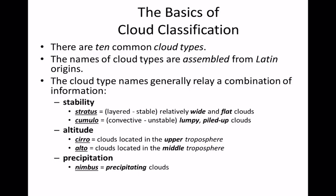If clouds are low, they don't have any prefix. If they're middle, they have an alto prefix. If they're high, somewhere in their name they have cirro or cirrus. We have two precipitating clouds that have NIMB associated with them. And then we have flat and fluffy clouds — if it's flat, it's stratus; if it's fluffy, it's cumulus.